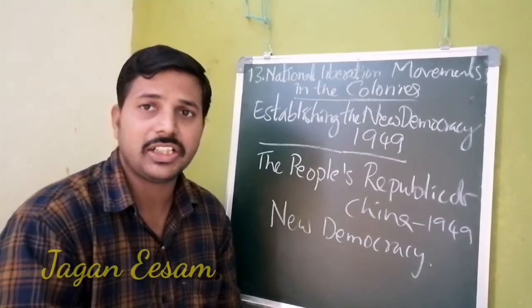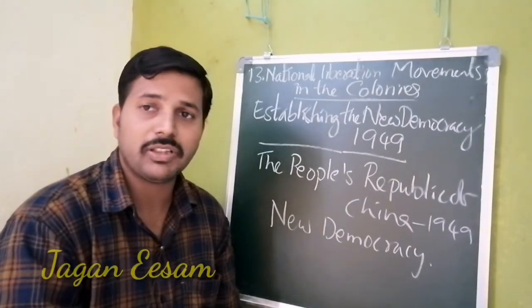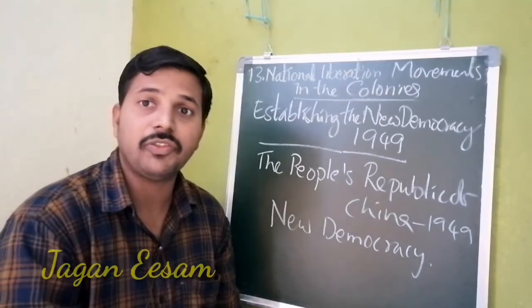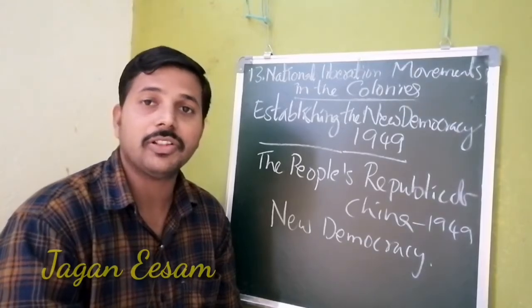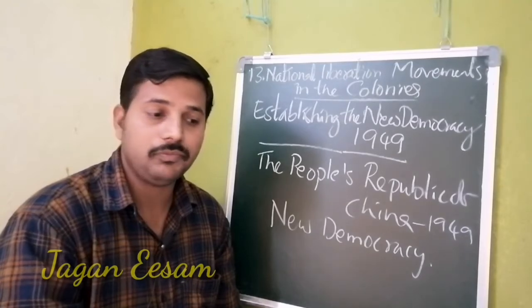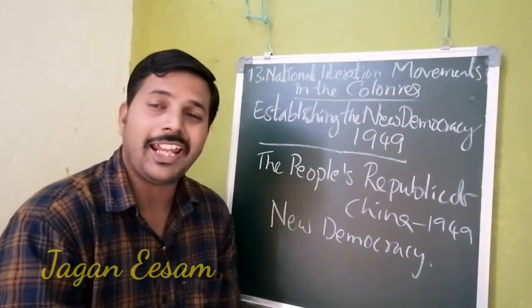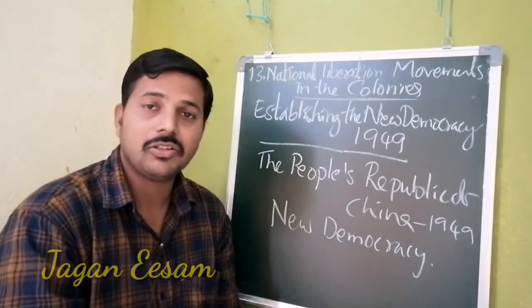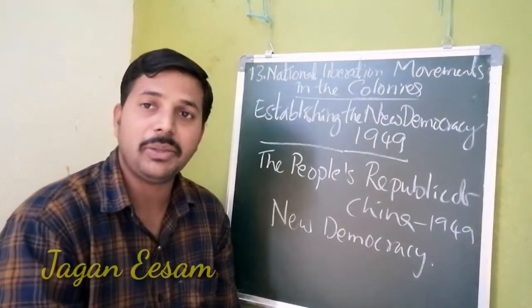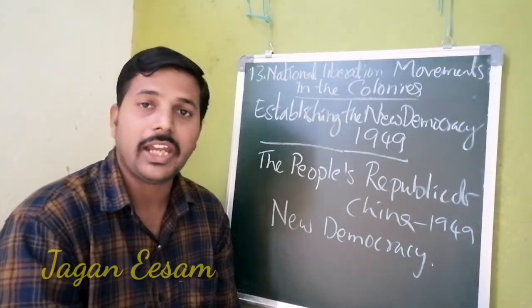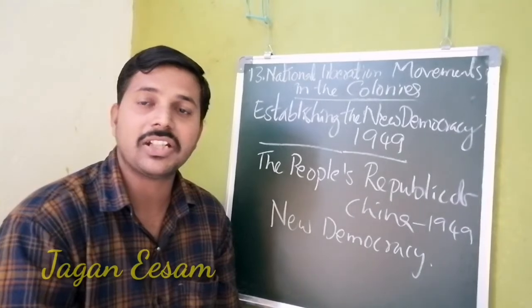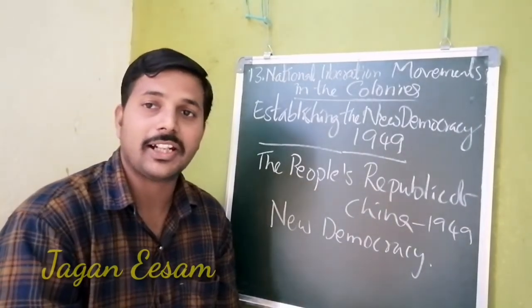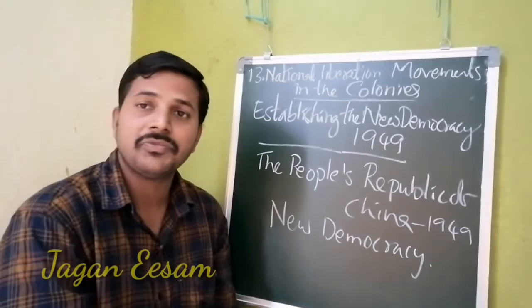The new government started fulfilling its promises. The major promises of the CCP party were land reforms and nationalization. As per its promise, the party started large-scale land reforms. In order to implement these land reforms, the CCP party first confiscated the land of the landlords.